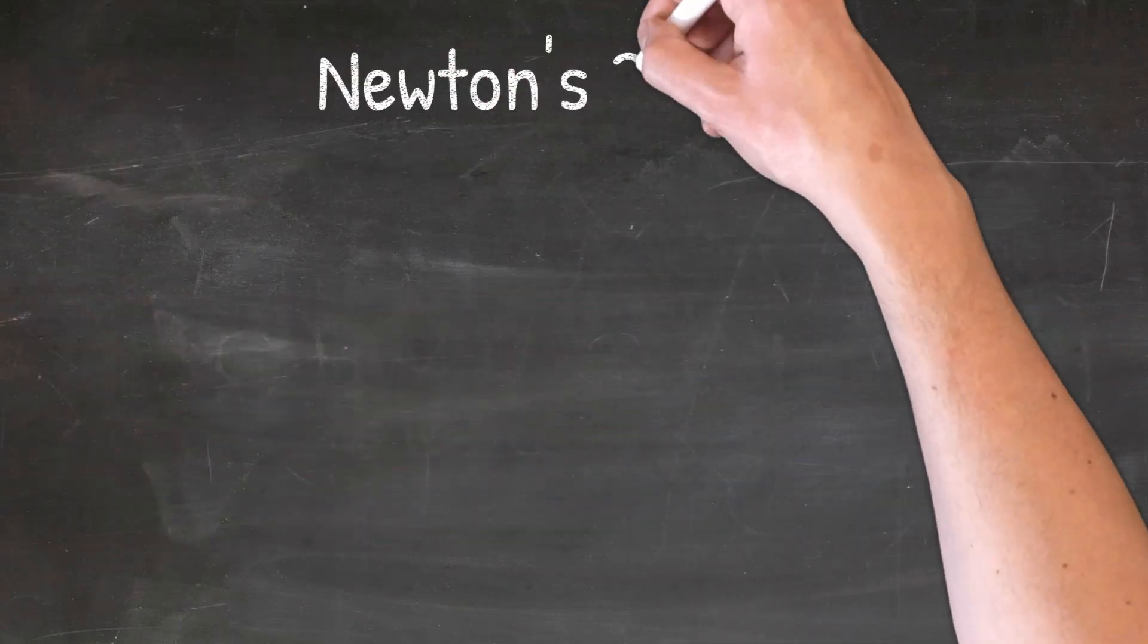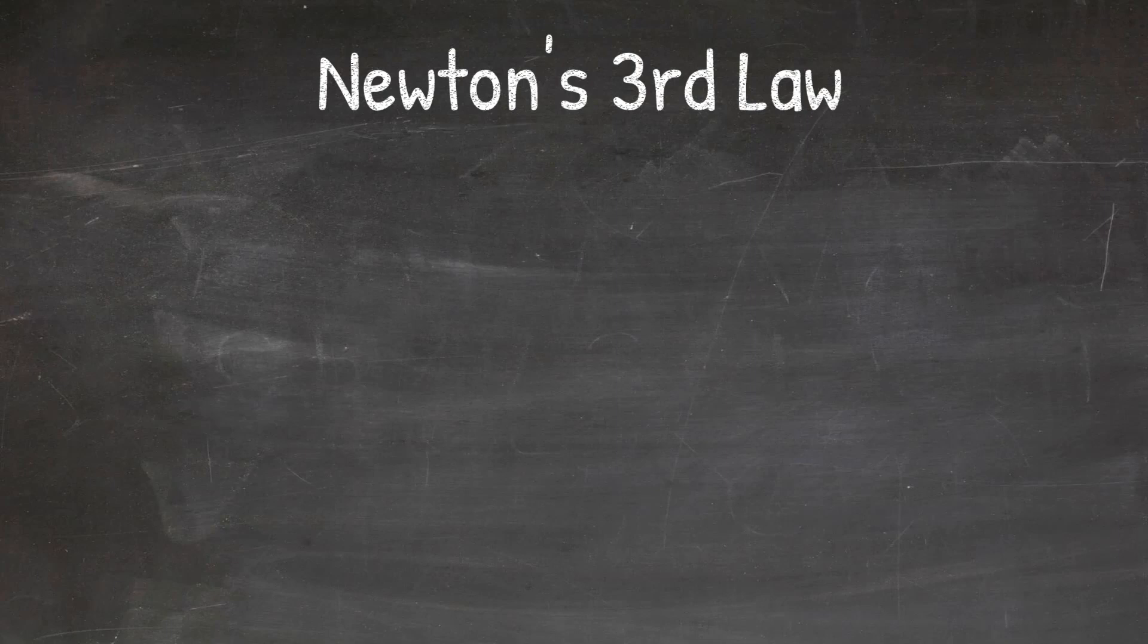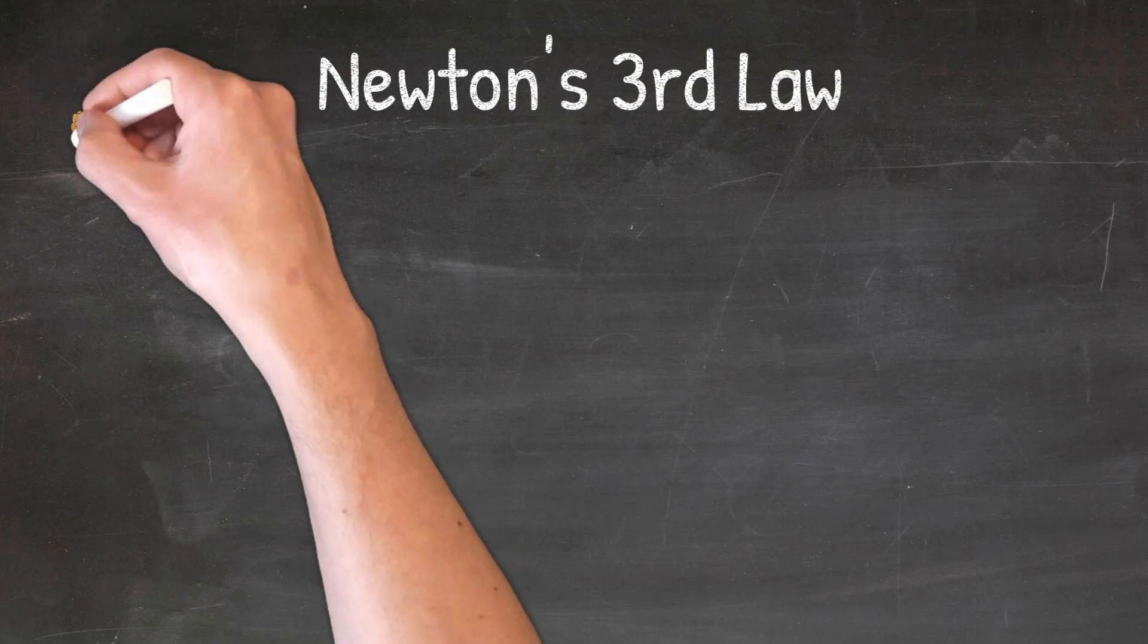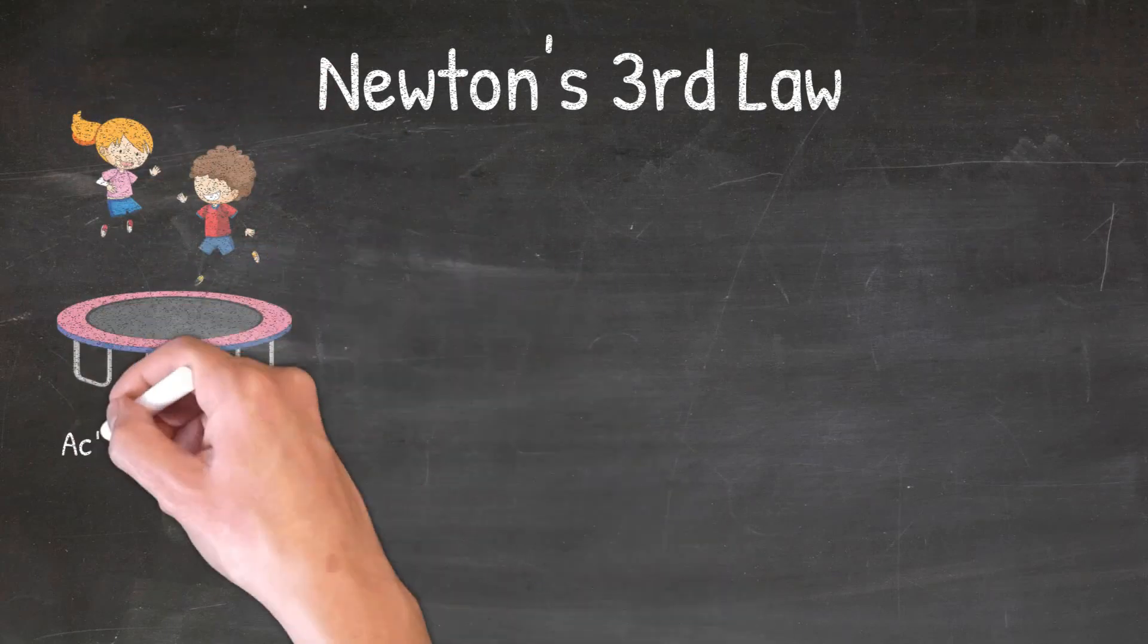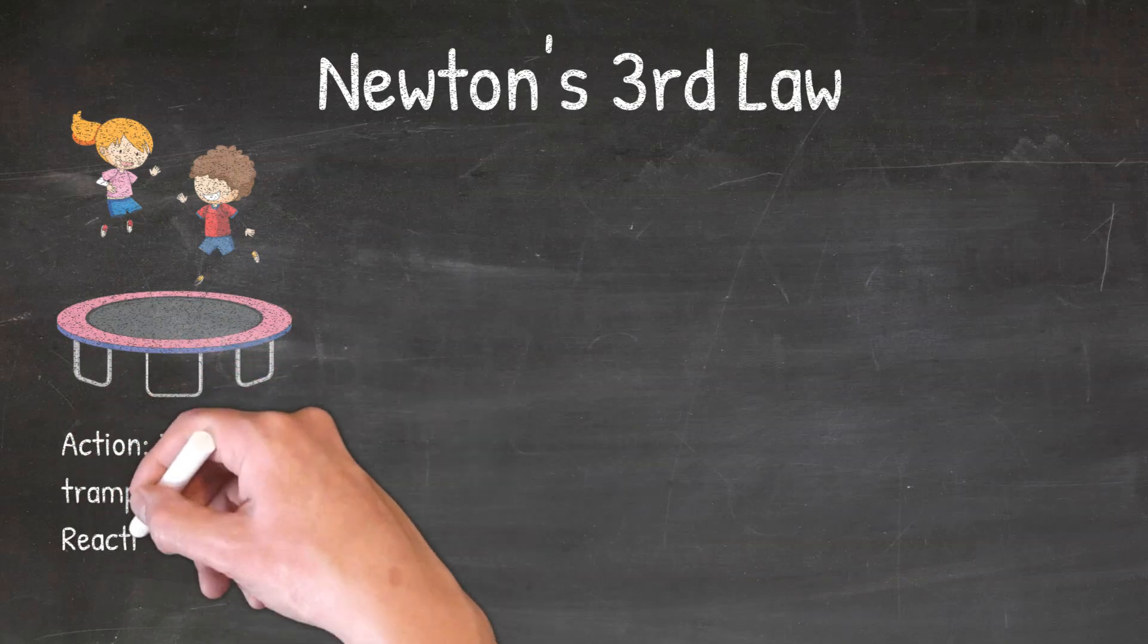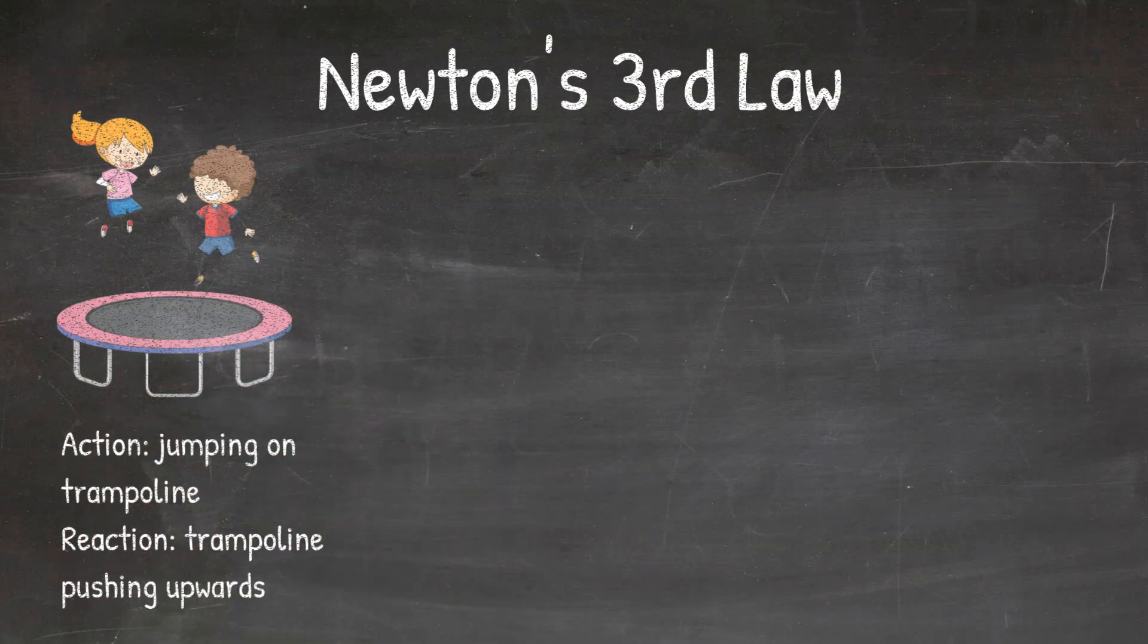When looking at examples of Newton's third law, it is helpful to look at the action and the reaction. When you jump on the trampoline you apply a force downward onto the trampoline which is the action, and the trampoline then applies a force upwards. This is the reaction and is also why you get propelled up in the air.